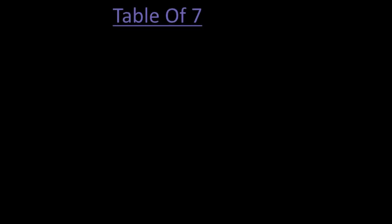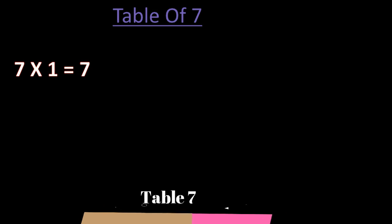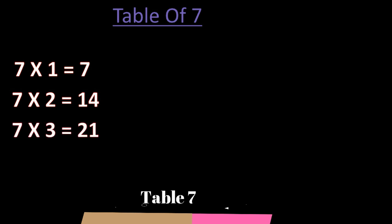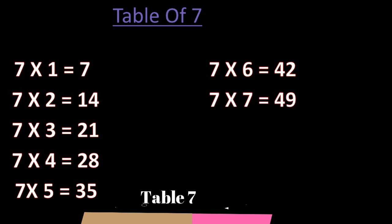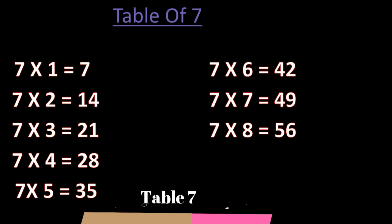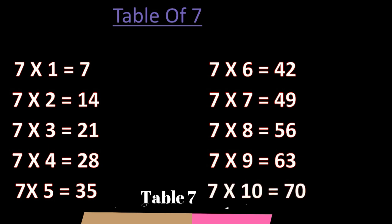Next table. Table of 7. 7 ones are 7. 7 twos are 14. 7 threes are 21. 7 fours are 28. 7 fives are 35. 7 sixes are 42. 7 sevens are 49. 7 eights are 56. 7 nines are 63. 7 tens are 70. So next table.